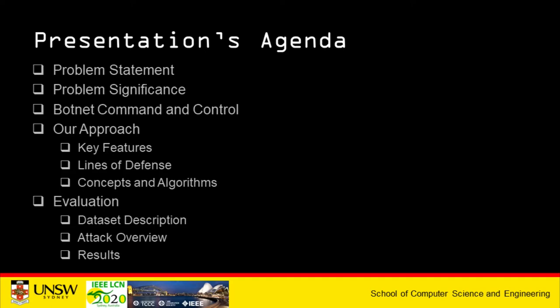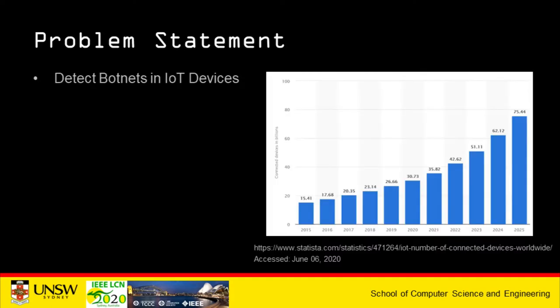I will draw a comparison between the performance of our work compared to other state-of-the-art techniques. Let's talk about the problem statement. In this slide I'm presenting a graph fetched from Statistica.com in June 2020. As you can see, it is estimated that by 2025 there will be more than 75 billion IoT devices in the field, and the growth of these devices is exponential. Our aim is to detect anomalous entities from all of these devices — these anomalies are mainly botnets.